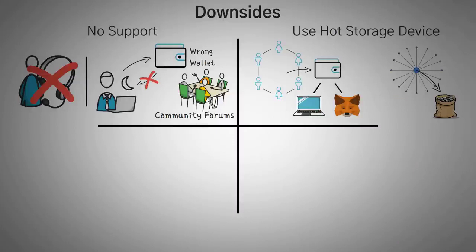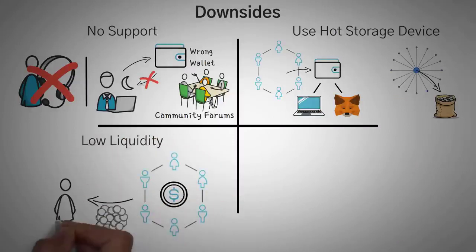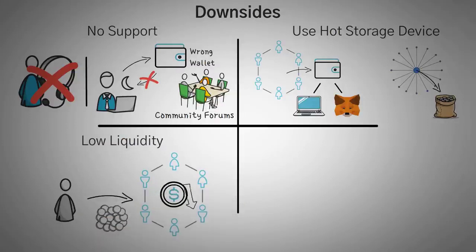Another drawback is that sometimes these DEXs have low liquidity, meaning that if you buy a lot of a token, the prices could shoot up. Vice versa too, if you sell a ton of tokens, you could crash the price.